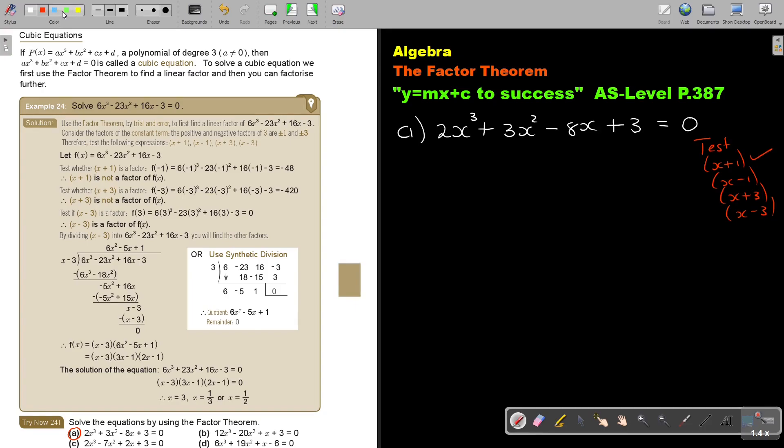Let's start with the first one, x + 1. So I substitute negative 1. 2(-1)³ + 3(-1)² - 8(-1) + 3. Let's see what we get. This is becoming -2 because it's negative. This one is 3. This one is 8, plus 3. No, it looks too big. Can you see? It's too big.